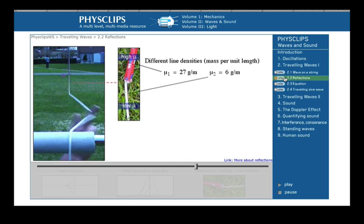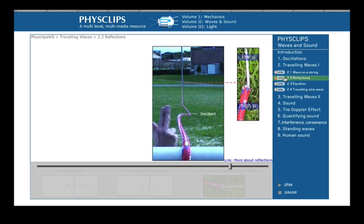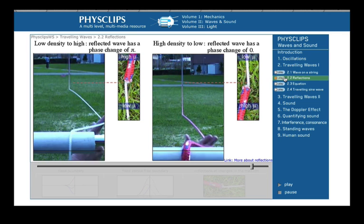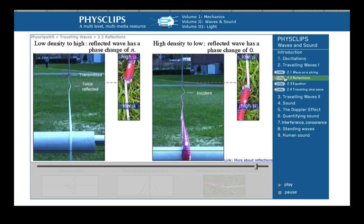Here, the string and the rope have different line densities mu, but when connected, share the same tension. Going from low density to high, we see that the wave reflected at the join has a phase change of pi. So does the reflection from the fixed end. As a result, both reflections return on the left side. Going from high density to low, the wave reflected at the junction has a phase change of zero, so it returns on the right side. The reflection from the fixed end still has a phase change of pi, so the two reflections return on opposite sides. In both cases, note that the transmitted wave has no phase change.